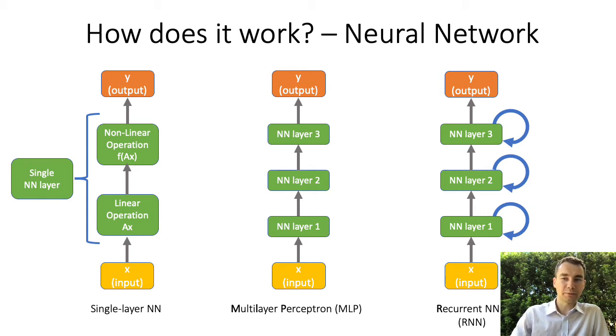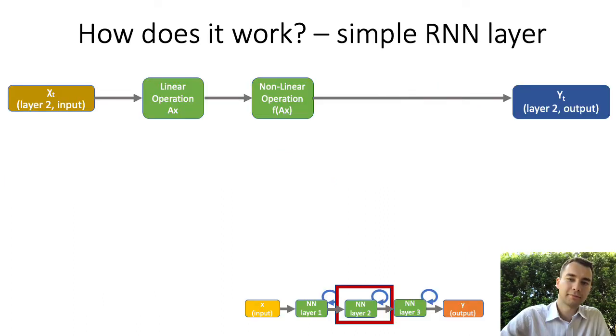Let us now zoom into one of these layers to see how such a feedback can be implemented. We start the construction of our RNN with the simplest neural network layer. We have linear operation followed by nonlinear operation.